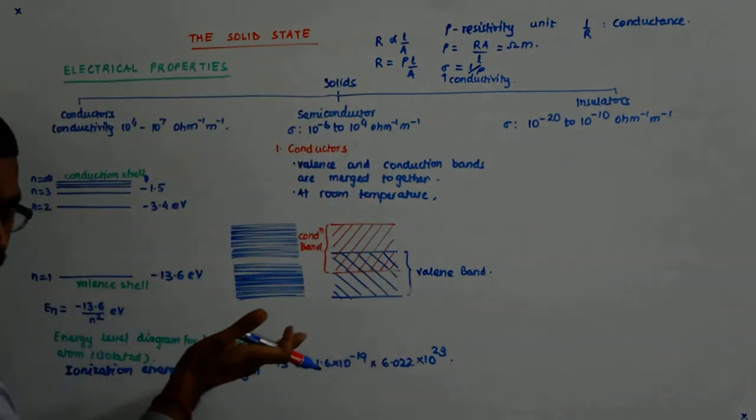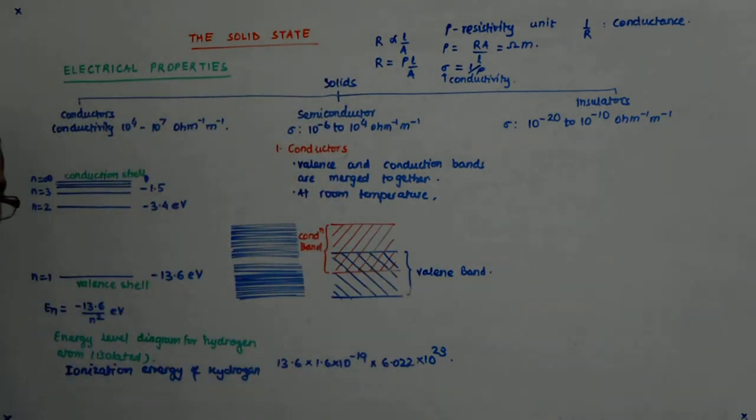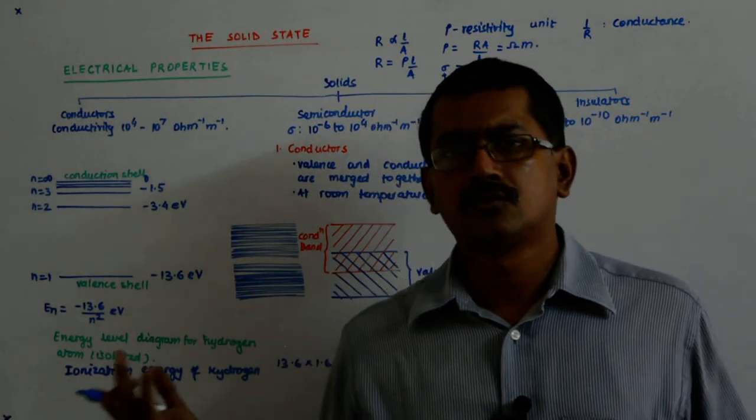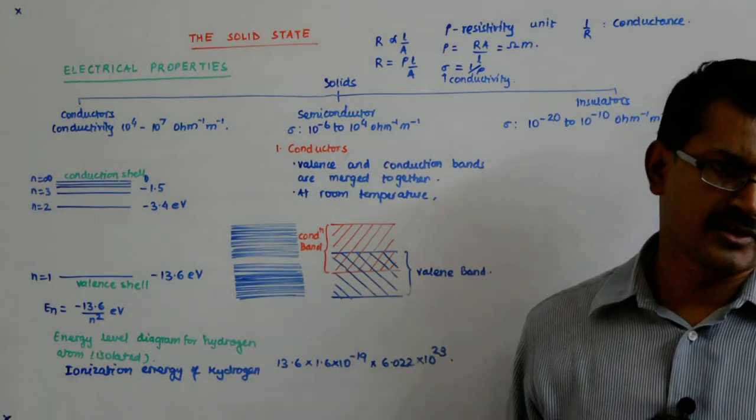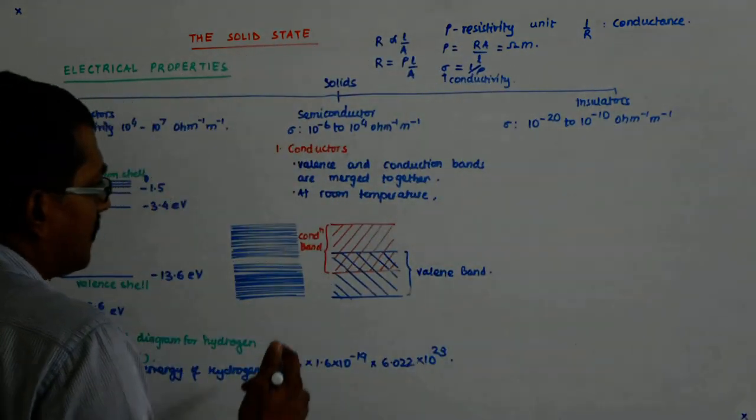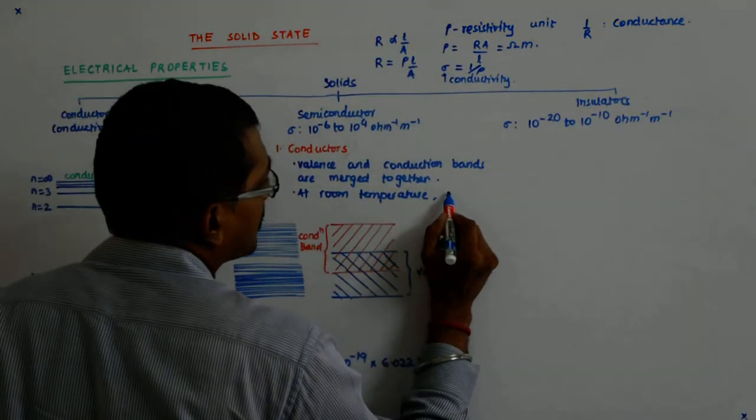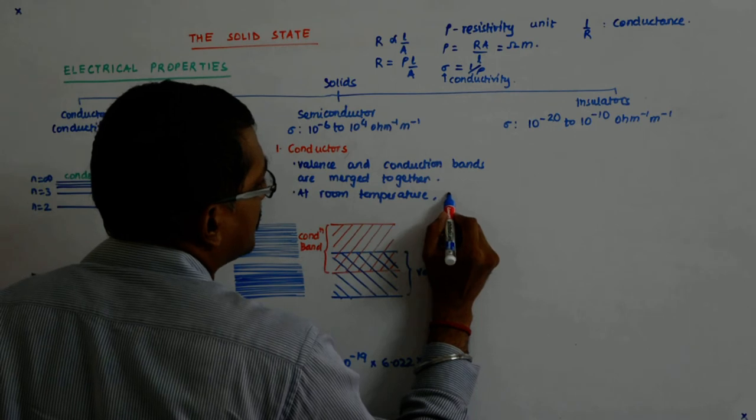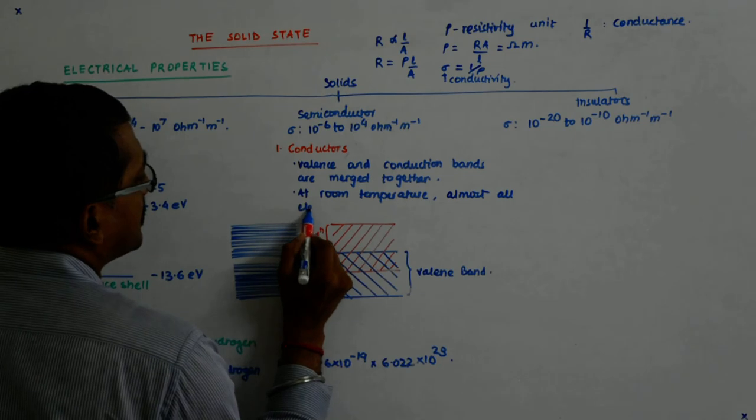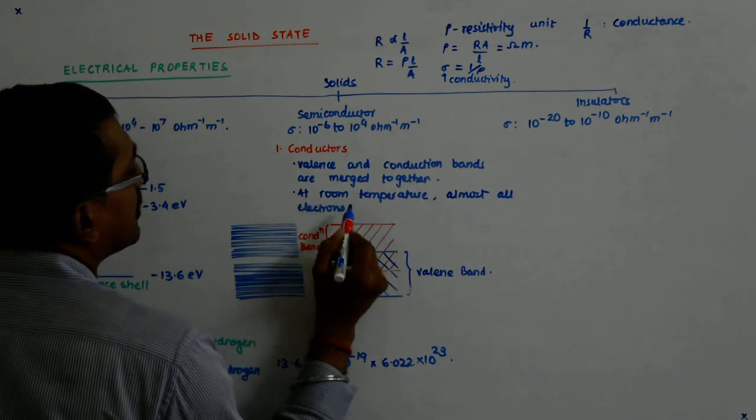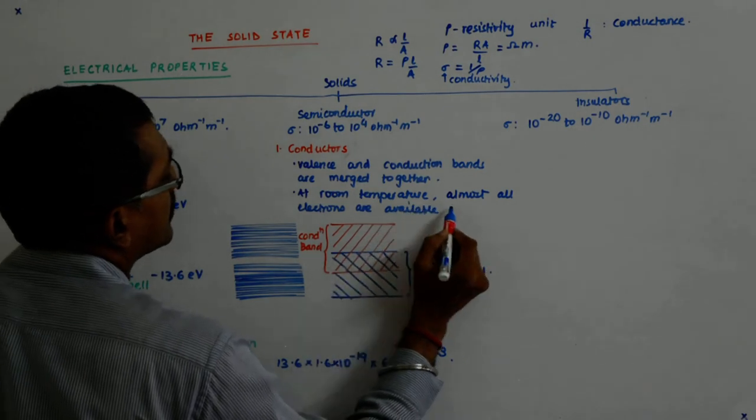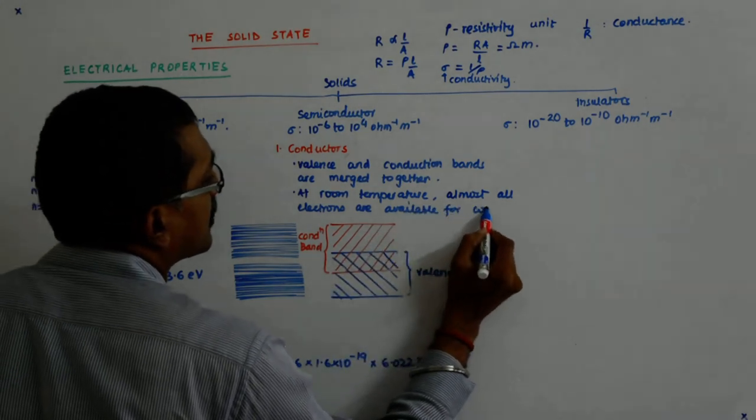Though it looks very significant, it is not. For example, in copper, each copper atom is able to give you two or three electrons per atom. But at room temperature, almost all electrons are available for conduction.